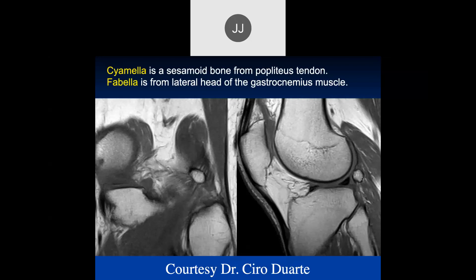The cyamella is down near the meniscus. As you can see, this is the popliteus muscle and popliteus tendon. It's more inferior and more laterally positioned. These are quite rare, but generally considered normal variants. If I do notice it, I will comment on cyamella in the report.